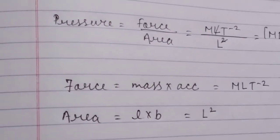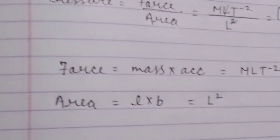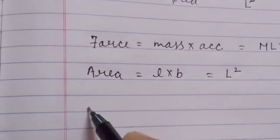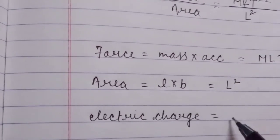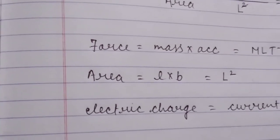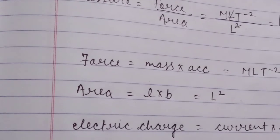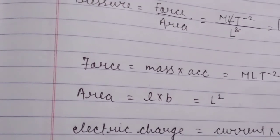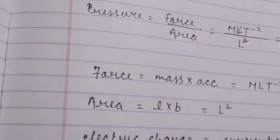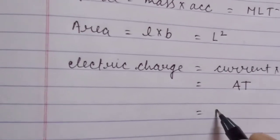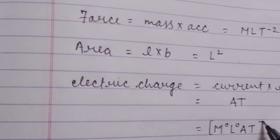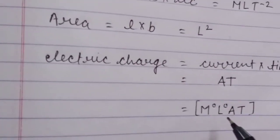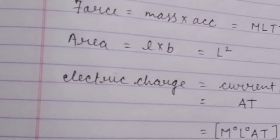Now let's find the dimensional formula for electric charge. Electric charge equals current times time. The dimensional formula for current is A, and for time it is T. So the dimensional formula for electric charge is M⁰ L⁰ A T. To master this, you should learn some basic formulas.